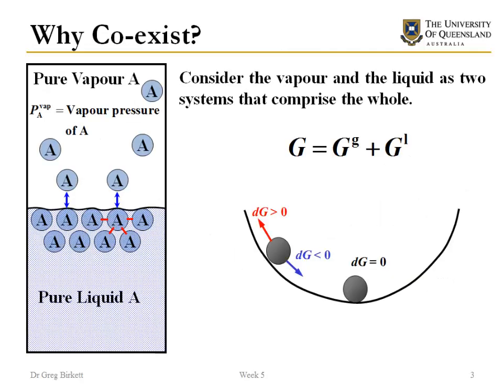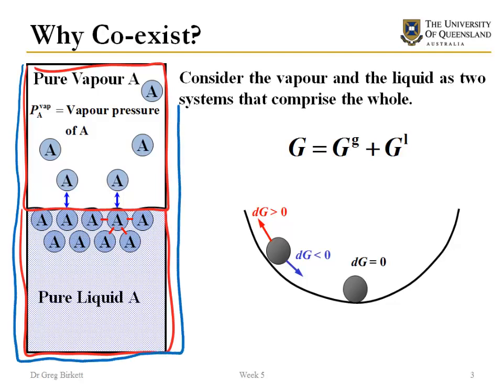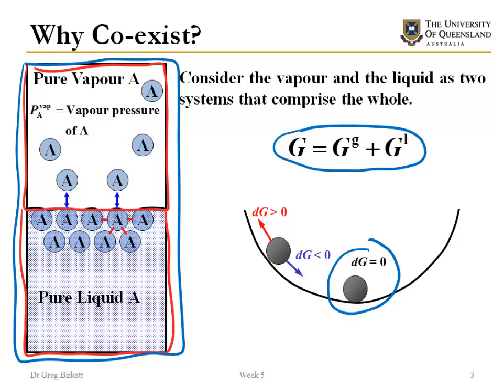The first thing we're going to look at is why do phases coexist at all? We have a system with a vapor phase and a liquid phase. We're going to define the Gibbs free energy of the system as a whole. We take the whole system, which includes both the gas and the liquid phases, and we say the Gibbs free energy of this system is the sum of the gas and the liquid phase Gibbs free energy. To be at equilibrium — where the vapor phase and liquid phase stay the same from a macroscopic viewpoint — the Gibbs free energy must be at a minimum.